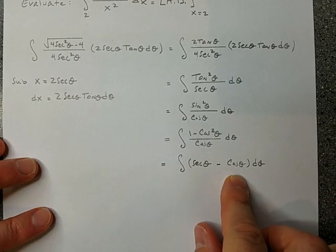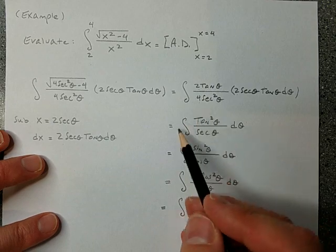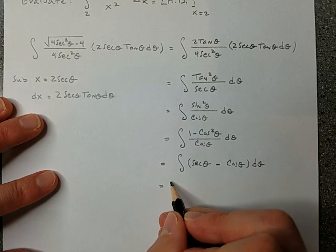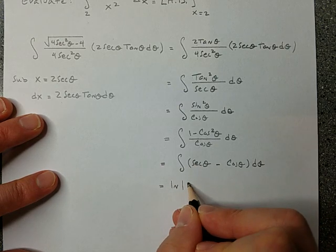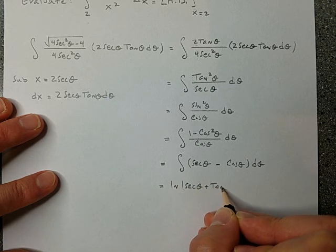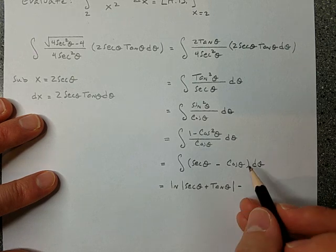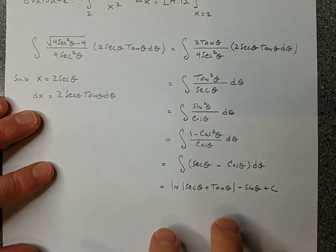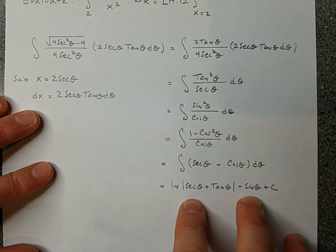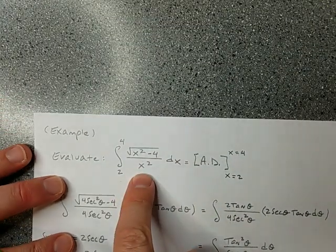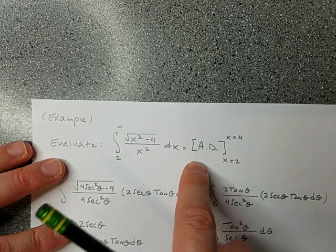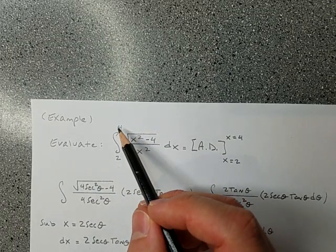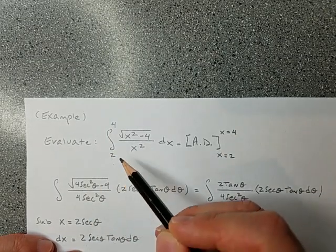The antiderivative of secant is natural log of absolute value of secant theta plus tangent theta, and the antiderivative of cosine is sine theta. So the antiderivative in theta is: natural log |sec θ + tan θ| minus sin θ plus C. Now I can convert this back in terms of x to use the original bounds.